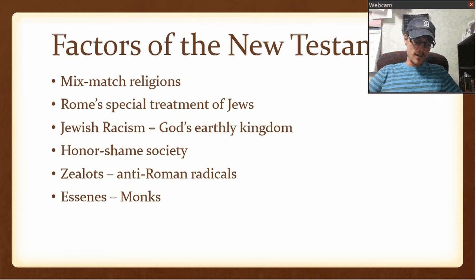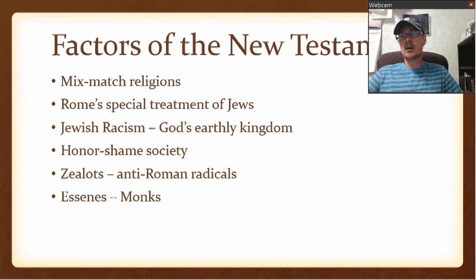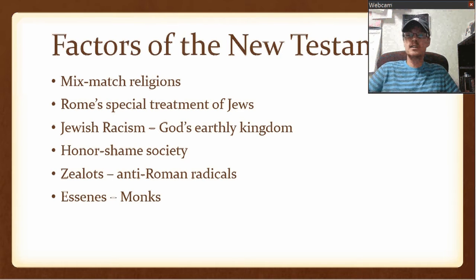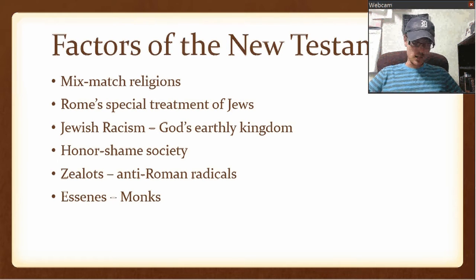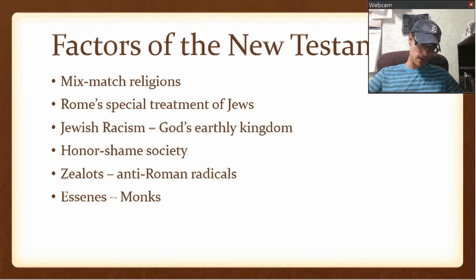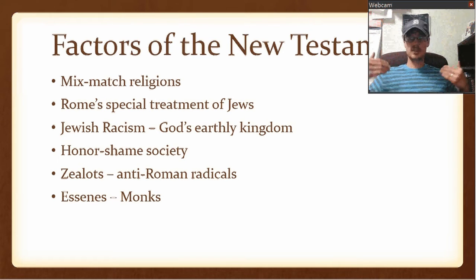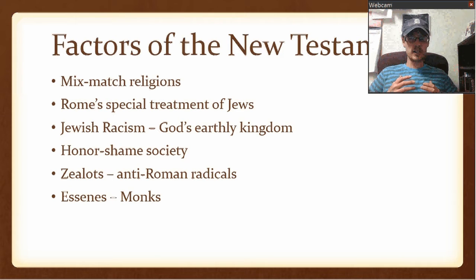The next group is called the Essenes, which are basically monks — that's the easiest way to clarify what they did. They're responsible for the Dead Sea Scrolls. They're responsible for the kind of separatistic living where they withdrew to their places because the world was just so evil.